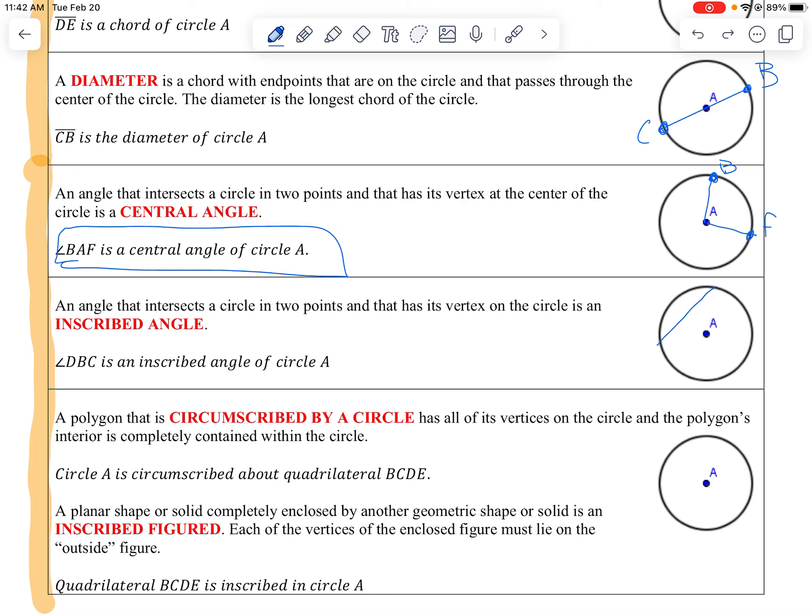You can also create an angle where the vertex and the points are on the circle. And this thing's called an inscribed angle. So if I do D, B, C, this is now inscribed angle D, B, C. It's an inscribed angle versus central angle. Those are just things you have to differentiate between. We're going to use those a whole lot. Central angle, inscribed angle.